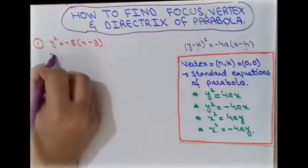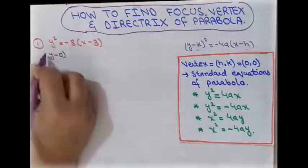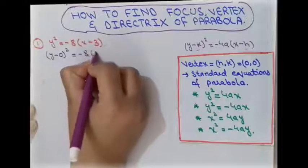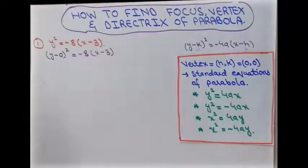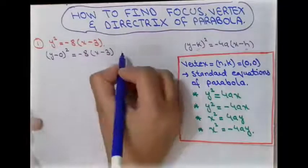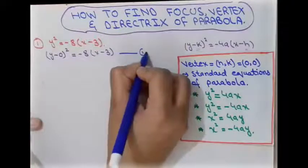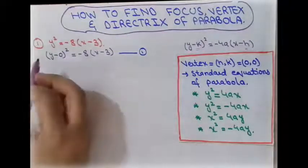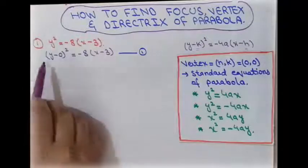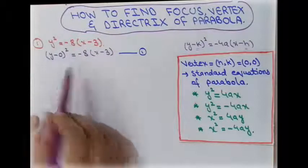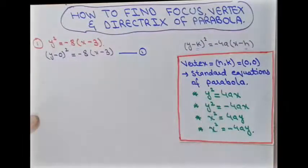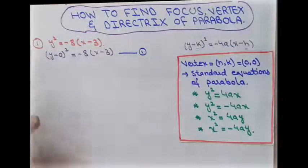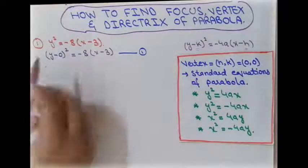We can write the given equation as (y − 0)² = −8(x − 3). This is our first equation. It does not look like a standard equation of a parabola, so our first step is to convert it into standard form.